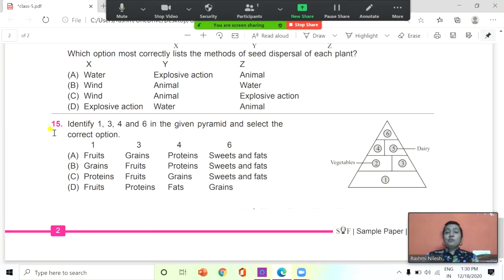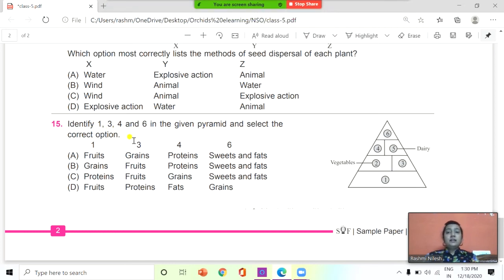And the last question for today, 15th. Identify 1, 3, 4, and 6 in the given pyramid and select the correct option. We need to identify. It is a food pyramid. Look at the options here. A: 1, 3, 4, 6: fruits, grains, proteins, sweets, and fats. B: grains, fruits, proteins, sweets, and fats. C: proteins, fruits, grains, sweets, and fats. And D: fruits, proteins, fats, and grains. You need to identify what will come here in place of 1, 3, 4, and 6. And the answer is B: grains, fruits, proteins, sweets, and fats.